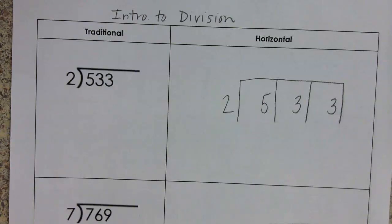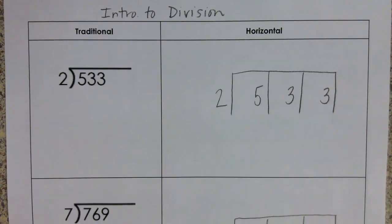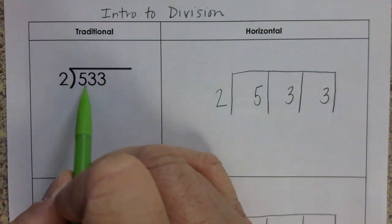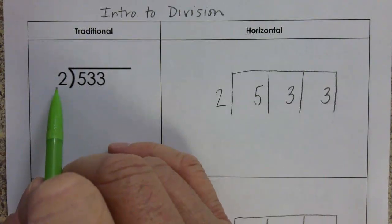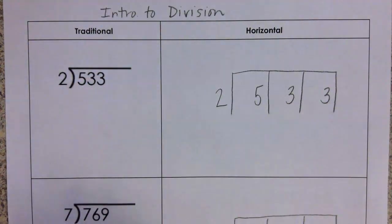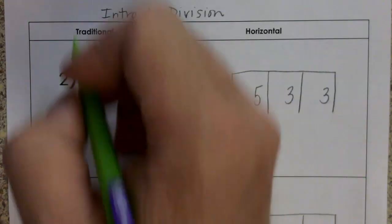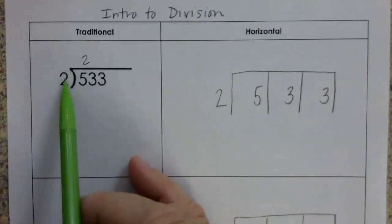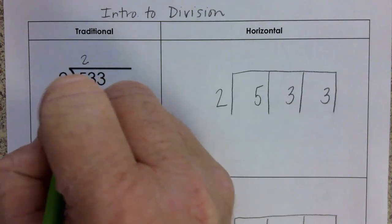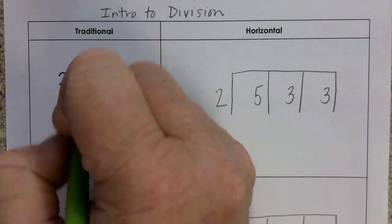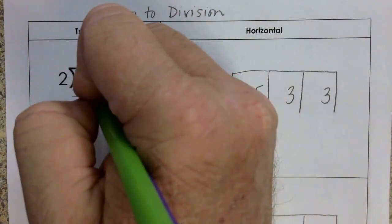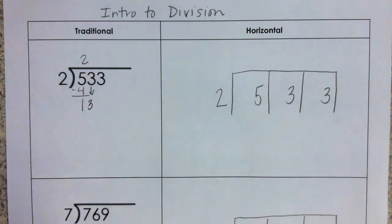I'm going to start with traditional. This is the only way I learned to do division when I was in school. We're looking at 533 divided by 2. We start here with the 5. 2 can go into that 5 2 times. 2 times 2 is 4. We subtract the 4. 5 minus 4 is 1. Bring down that first 3.